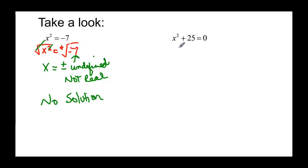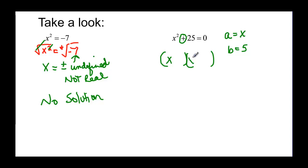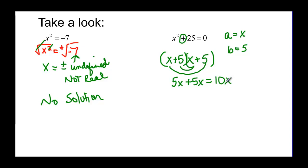Over here it looks like a difference of squares because they're both perfect squares, but this sum sign makes all the difference. If we go back and think about it: a would be x, and b would be 5. But having a positive 25 means the signs would both be positive — plus 5 and plus 5. The outside terms give 5x and the inside terms give another 5x, totaling 10x, which is not what the problem has. So you cannot factor this — it would be prime, or more accurately, no real solution, because you cannot factor x squared plus a perfect square.